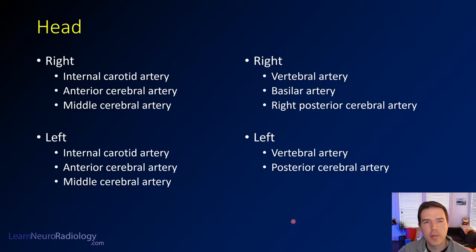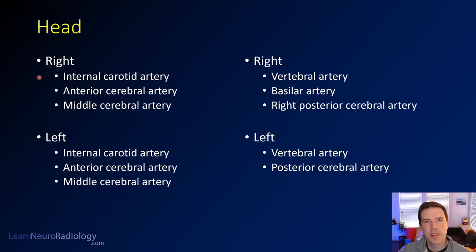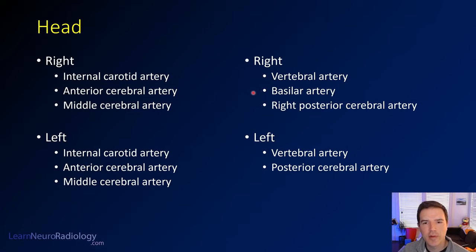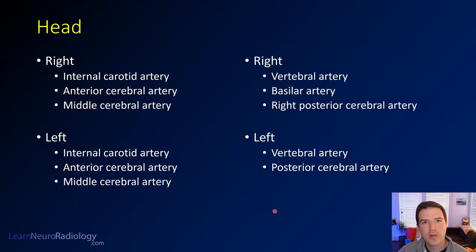Now we move on to the head, following a similar pattern — anterior to posterior, then right to left. We'll start with the anterior structures, including the internal carotid artery, anterior cerebral artery, and middle cerebral arteries — right first, then left — before going posteriorly to look at the vertebral artery, the basilar artery, the right posterior cerebral artery, then the left vertebral artery and left posterior cerebral artery, passing by the basilar artery again as we go.